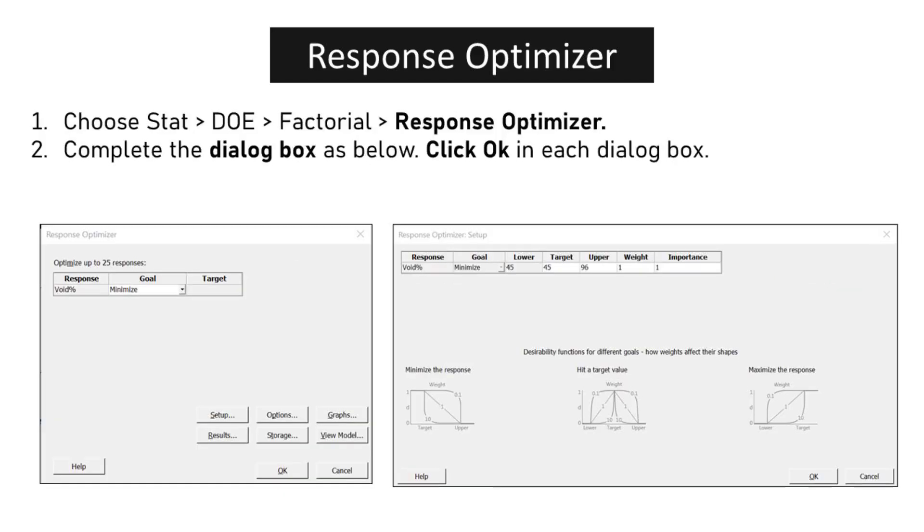Choose STAT, DOE, Factorial, Response Optimizer. Complete the dialog box as below. Click OK in each dialog box.